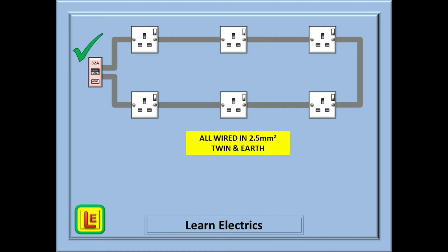Let us begin with a standard ring circuit as you would find in most domestic properties in the UK. We can see here that the ring is protected by a 32 amp breaker and that the wiring is in 2.5mm twin and earth cable.